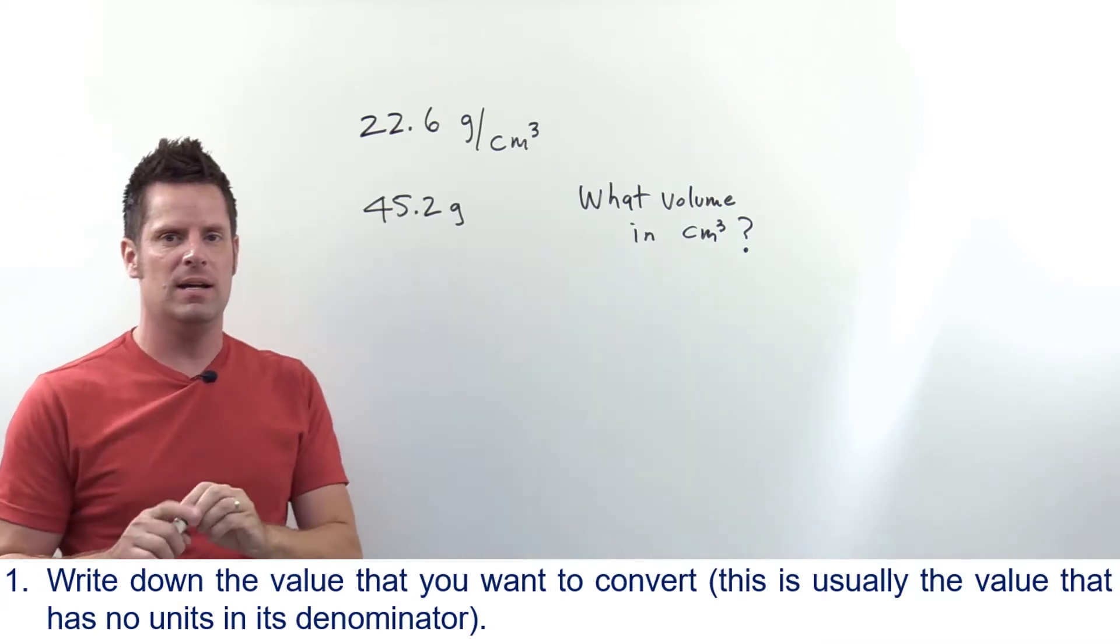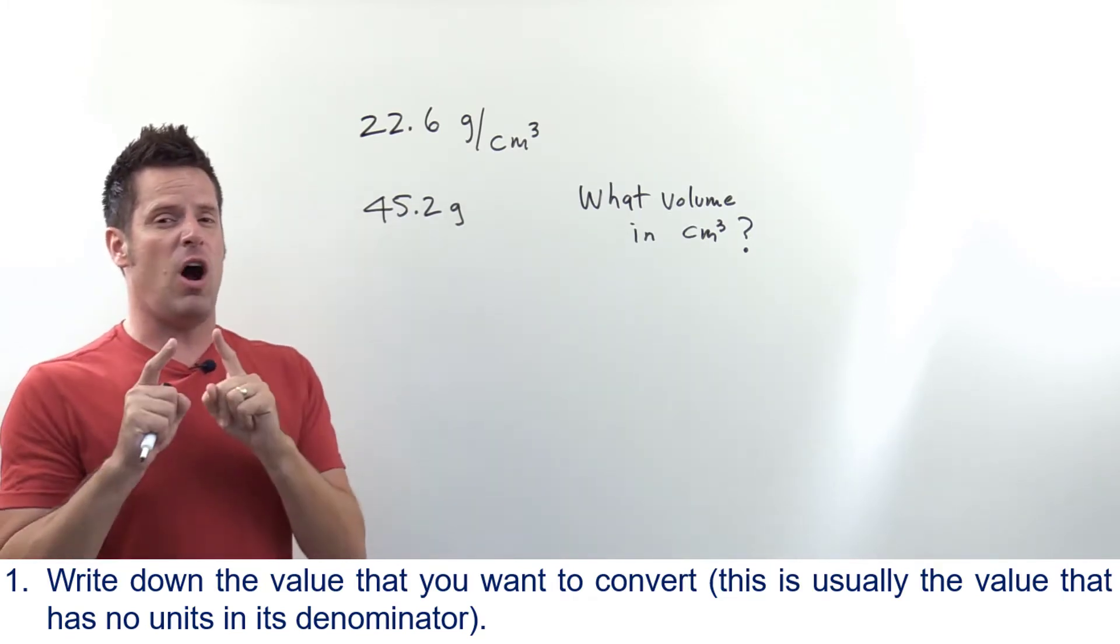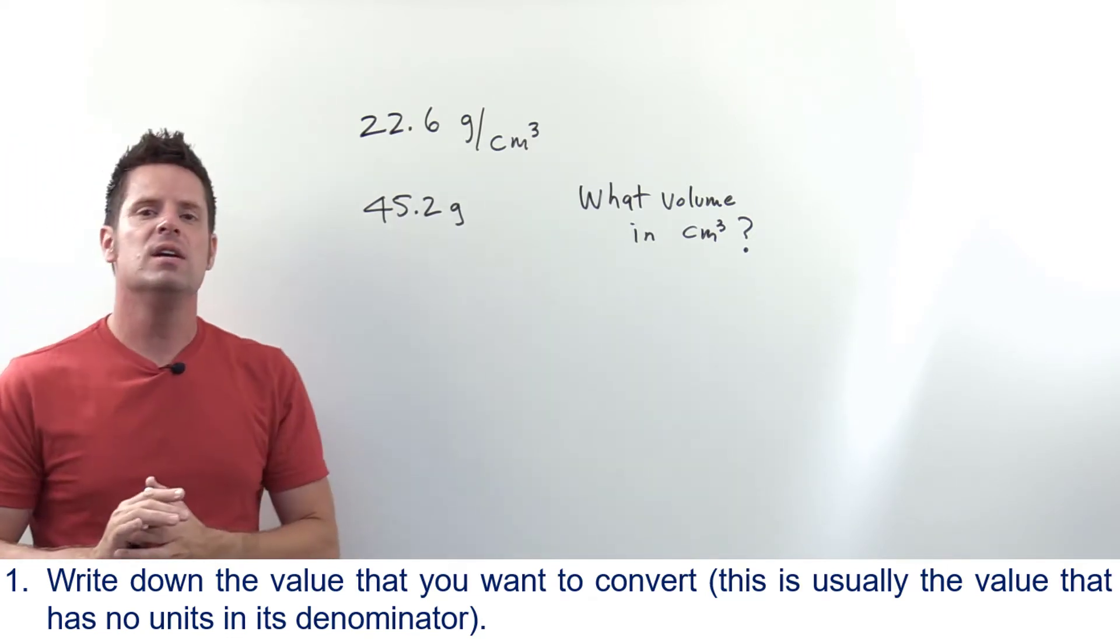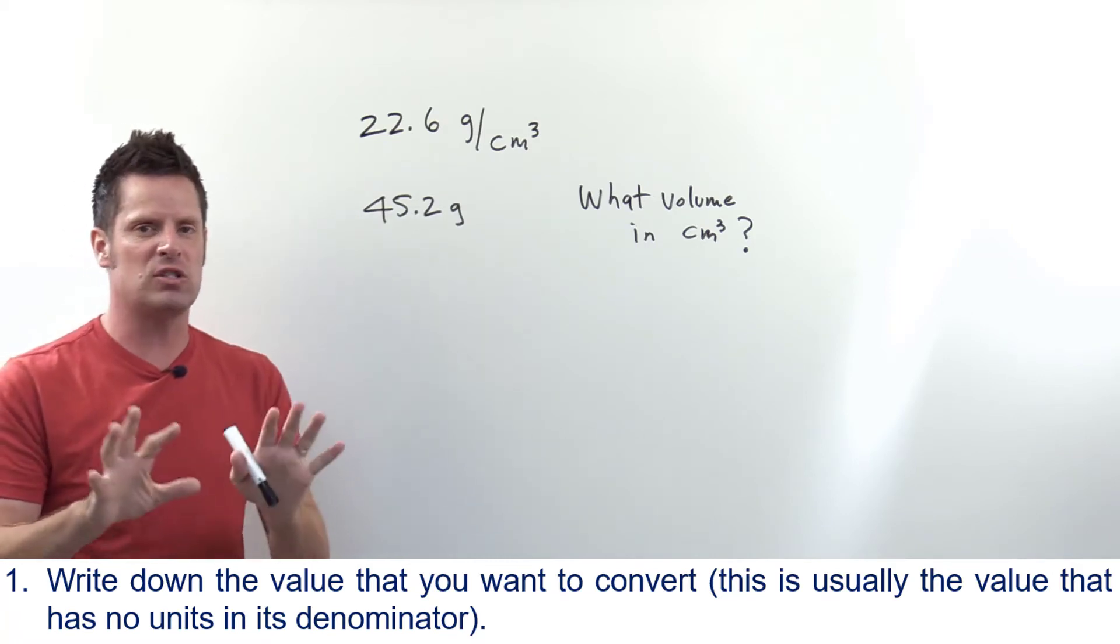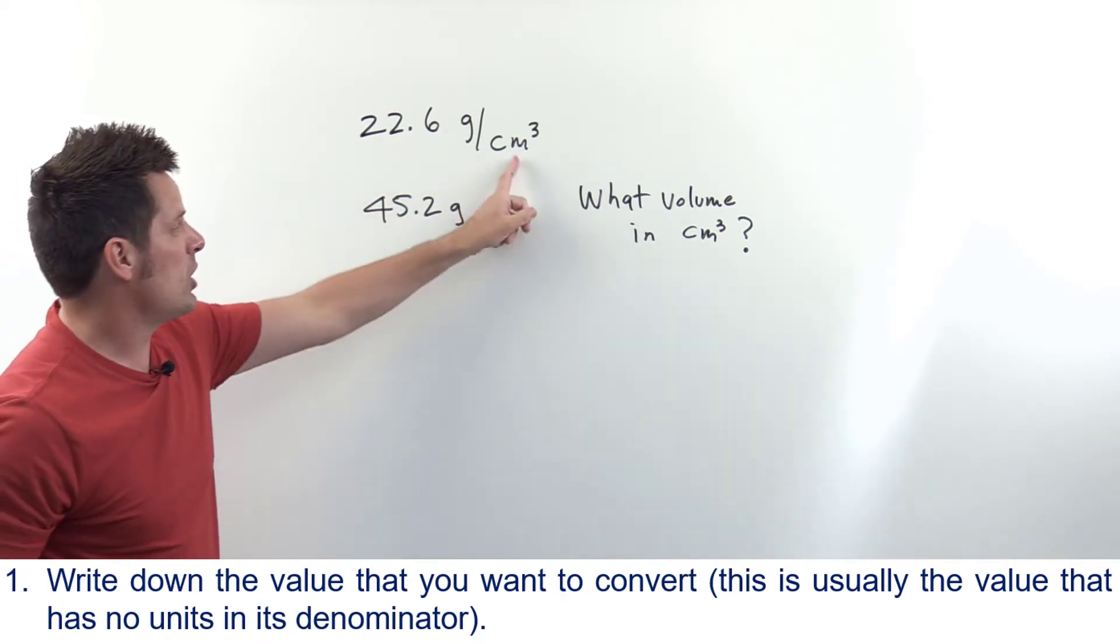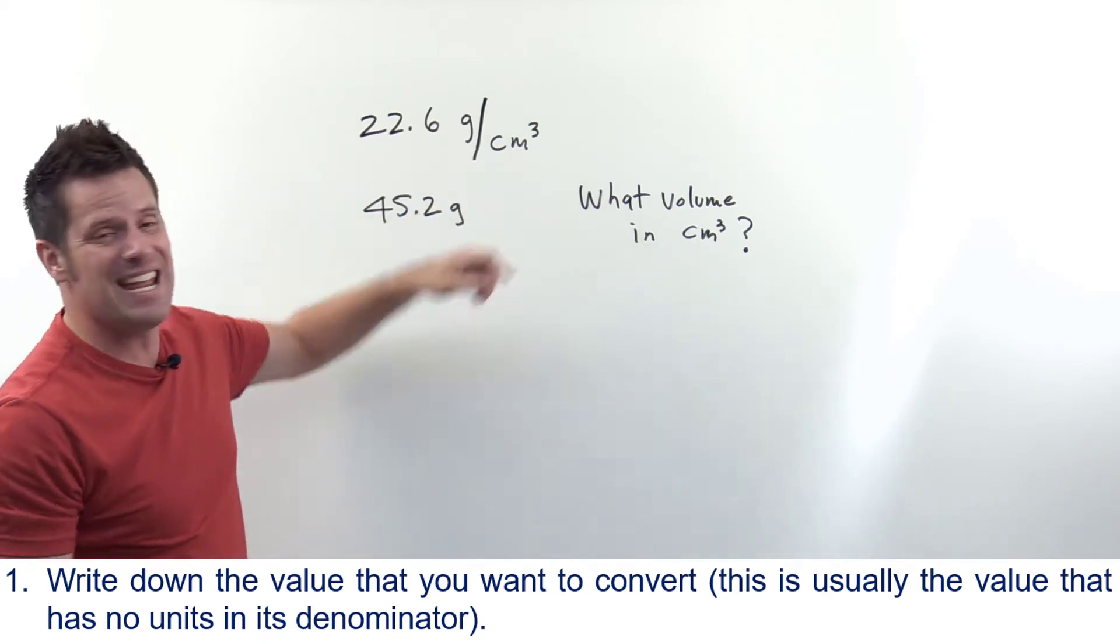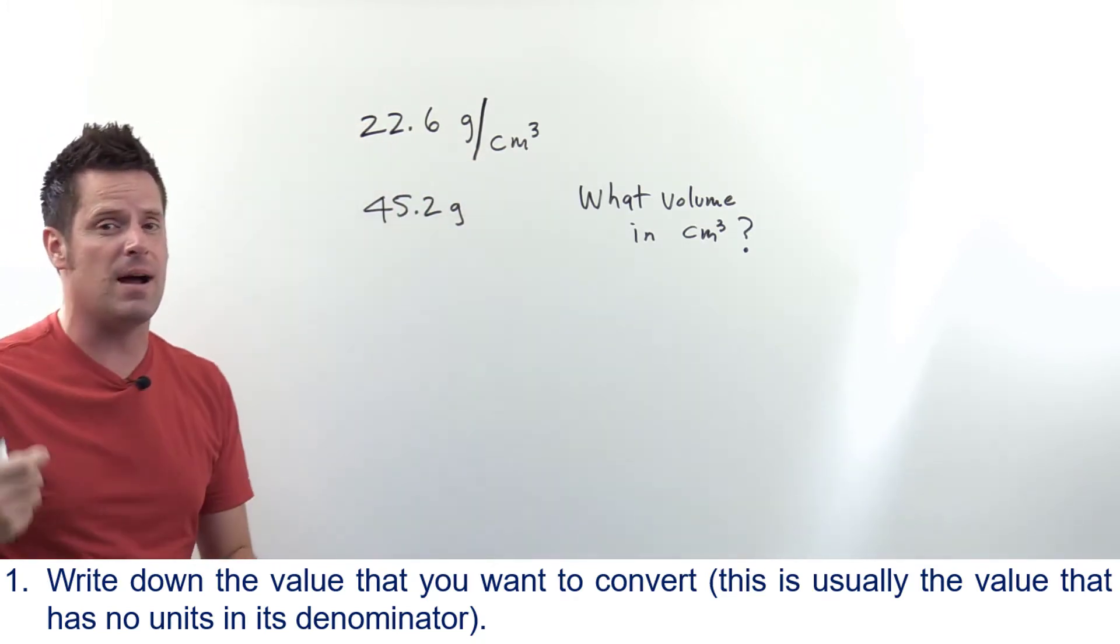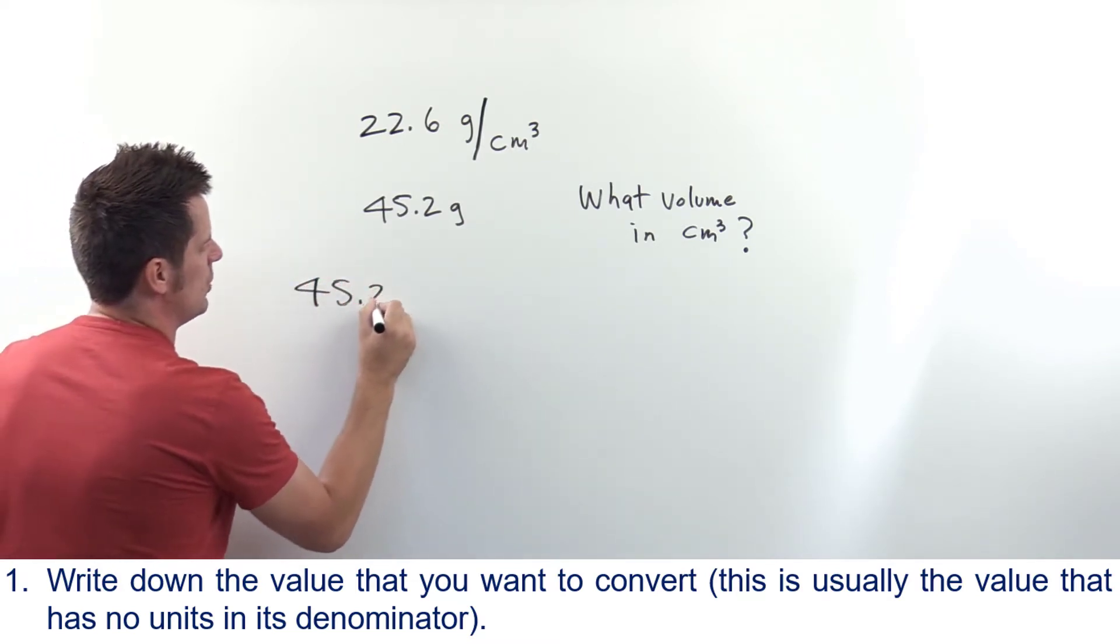Step one is we look at our terms and pick one that we've been given. Now sometimes we have problems like this where we have more than one term. One of the things that I always do in this situation is I look for a term that has no denominator units. Most of the time if you have multiple terms, the one you're going to want to start with is the one that has no denominator units where possible. You'll notice that here I've got 22.6 grams per cubic centimeter - the cubic centimeter here is in the denominator. This term has denominator units so I'm not going to start with that. But the other term, 45.2 grams, has no denominator units. So that's where I'm going to start. I'm going to write down 45.2 grams.